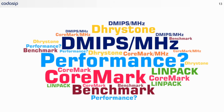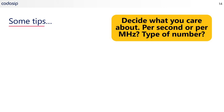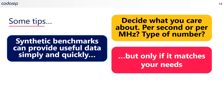That's a lot of information. How does a designer make sense of all this? Well, let's end with some tips. Firstly, you need to decide what you really care about — are you caring about performance per second or per megahertz? If you're looking at absolute performance, then you can't just rely on the per megahertz figure. You need to look and see what the processor is capable of at your target clock frequency. What type of arithmetic are you needing? You need to see if what you're measuring in a synthetic benchmark matches that. Synthetic benchmarks can provide useful data simply and quickly, but only if what they're measuring matches what you really need.